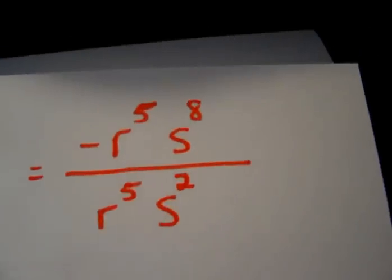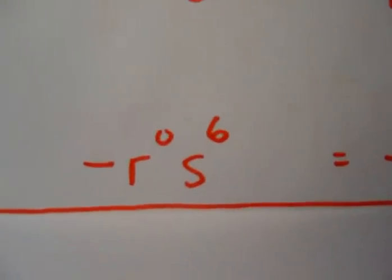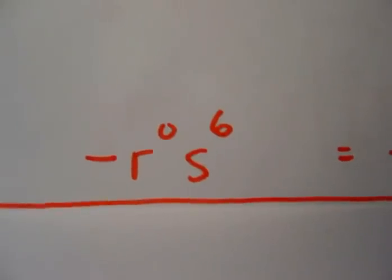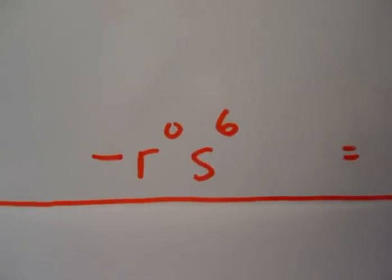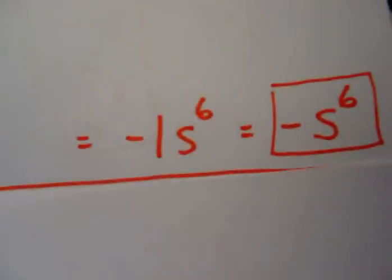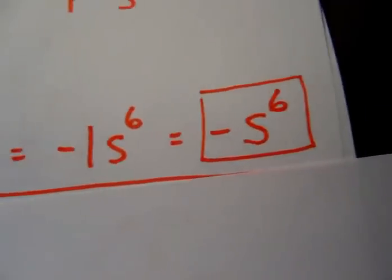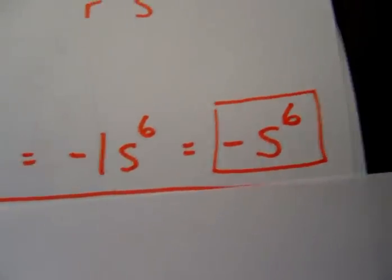We have negative r to the 0th power, s to the 6th. That's because if you have exponents of 5 minus 5, that becomes 0, and 8 minus 2 becomes 6. So there you go. We can simplify this one step further because anything to the 0 power is 1. So r to the 0 becomes 1, but there's the negative in front of it. So we have negative 1 s to the 6th, which is the same thing as just negative s to the 6th.